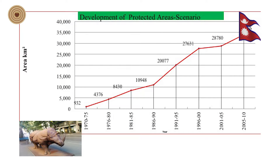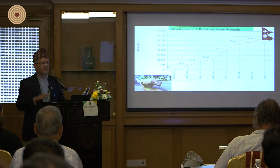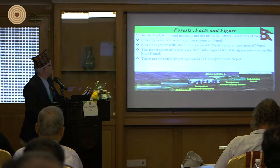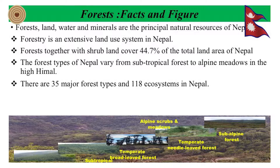The development of the protected area scenario grew from the 1960s–70s through to 2010. We are now at a stable level — we are not increasing the protected area but maintaining what we have. As for forest facts and figures: forest is an extensive and useful ecosystem. We now have 44.7% of the country covered by forest area. The forest types vary from sub-tropical to alpine, from 60 meters to 8,884 meters. There are 35 major forest types and 118 ecosystems in Nepal.